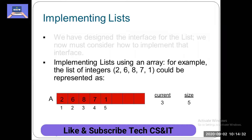First of all, we have a list. Implementing lists using an array. For example, a list of integers. We have 2, 6, 8, 7, 1 — this could be represented as [2, 6, 8, 7, 1] in an array. There is no issue. This is what we have represented in the list.